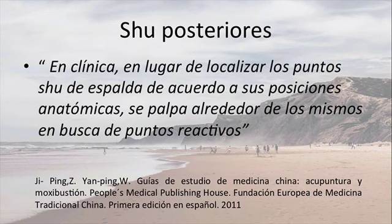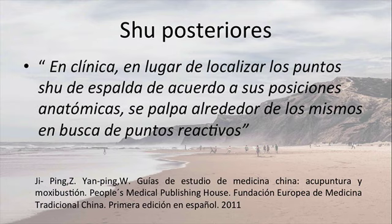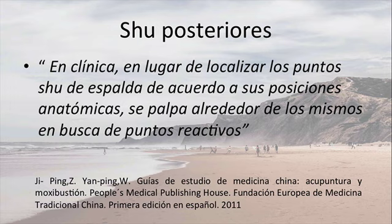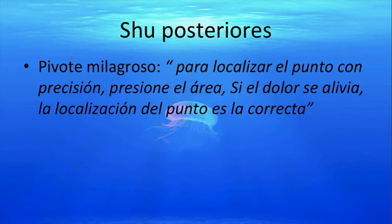Los Shu posteriores están sobre el canal de vejiga, sobre la primera línea, la línea más medial hacia la línea media: la primera línea del meridiano Taiyang del pie. Más que saber la localización exacta del punto, la forma más adecuada de encontrar su ubicación es a través de la palpación. Cuando yo encuentro puntos reactivos sobre el primer canal de vejiga y sé que el paciente, por un método diagnóstico bien hecho, tiene alguna alteración de algún Zanfu, ese Zanfu está representado a través de ese punto y lo voy a encontrar reactivo. El Pivote Milagroso dice: para localizar el punto con precisión, se presiona el área; si el dolor se alivia, ahí está el punto.